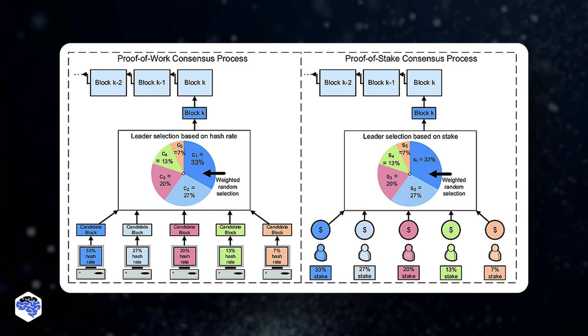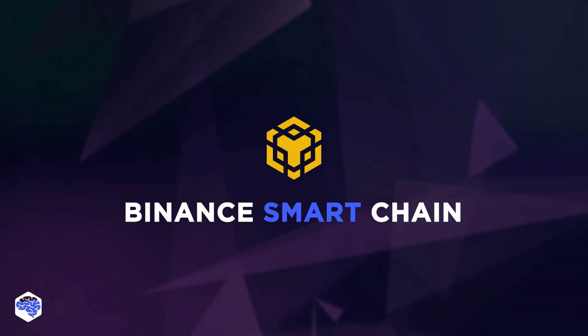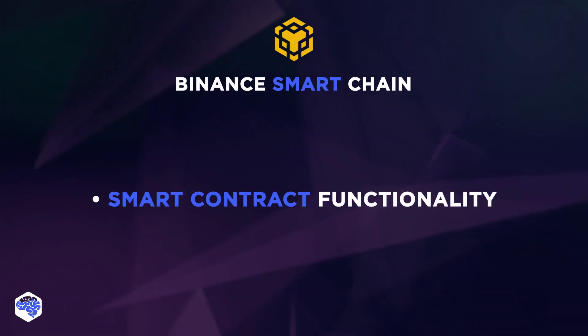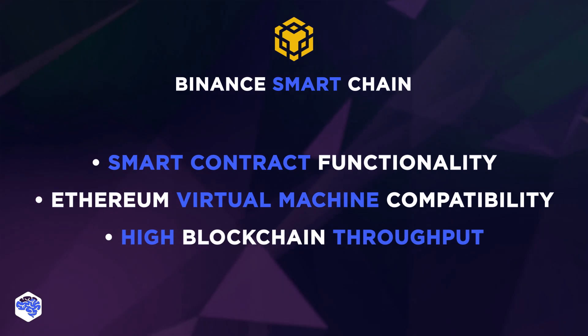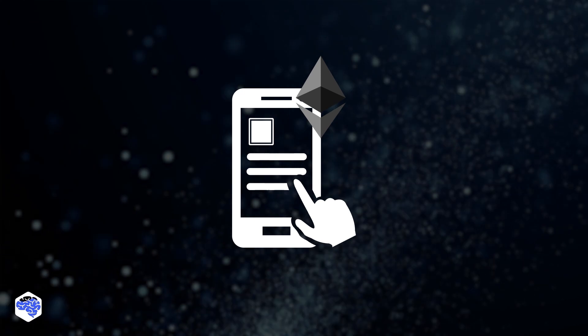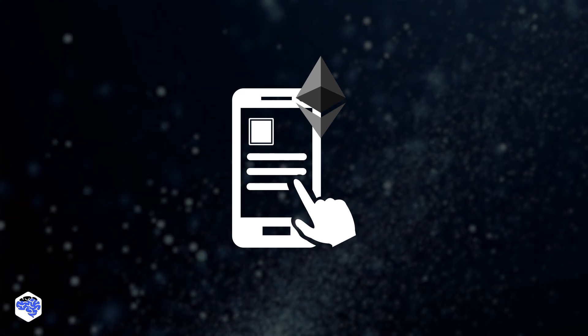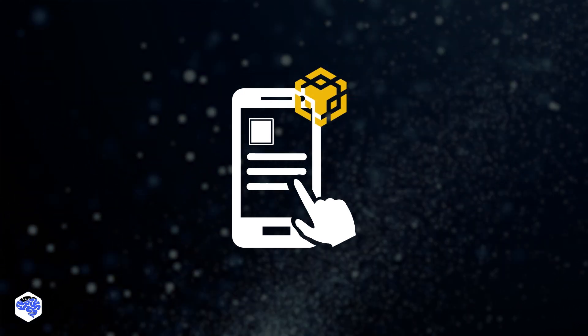The innovative combination of PoS and PoH makes Solana a unique project in the blockchain industry. Users love Binance Smart Chain for its smart contract functionality and Ethereum Virtual Machine compatibility, combined with high blockchain throughput and three-second block time. This means Ethereum-native applications can easily switch to BSC and enjoy faster speeds and lower fees.